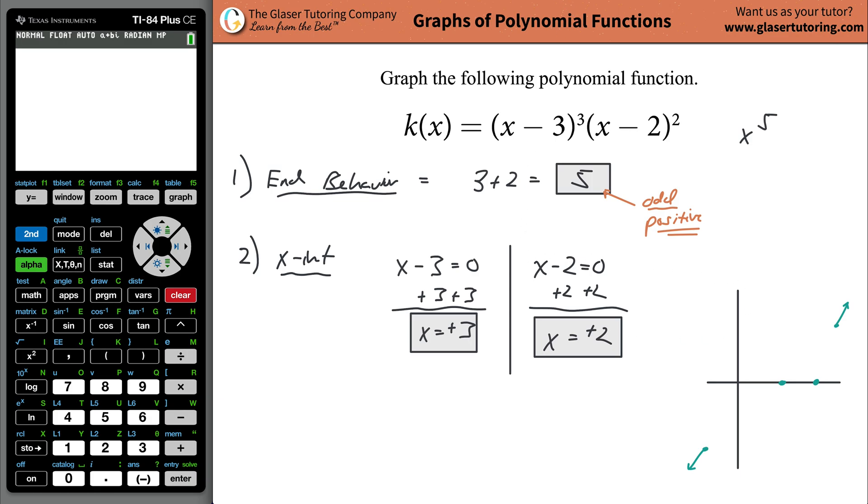The next thing I want to do is identify not only those x-intercepts, but also the local behavior around these x-intercepts. Does the function cross the point? Does it come up and bounce? This is easily found from looking at the multiplicity or the powers of each individual factor.